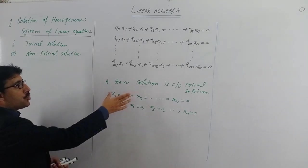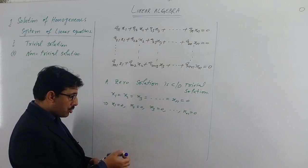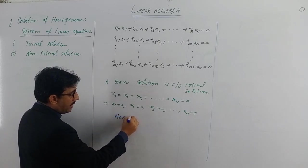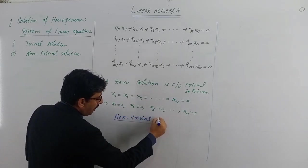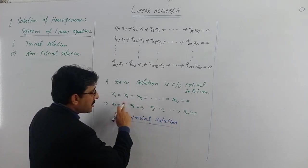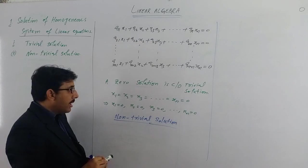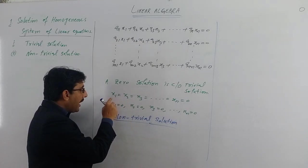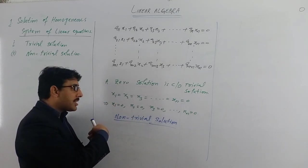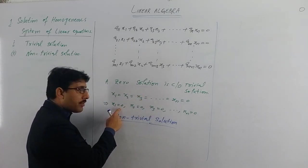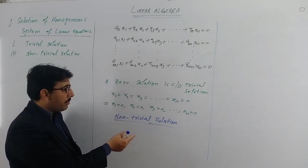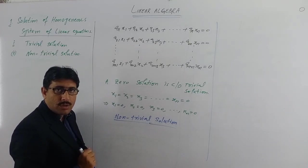A non-trivial solution is a solution other than the trivial solution — a solution that is not zero. 'Not zero' means that among the values of your unknowns, not all of them are zero. If at least one unknown has a non-zero value, then we say that solution is a non-trivial solution.